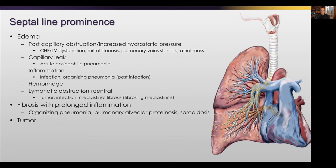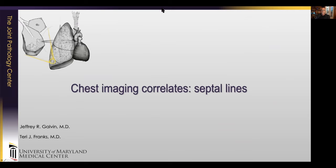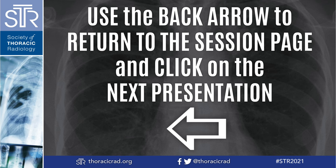In summary, for perilymphatic disease, the things to think about are edema, fibrosis with prolonged inflammation, and finally tumor. Thank you very much.